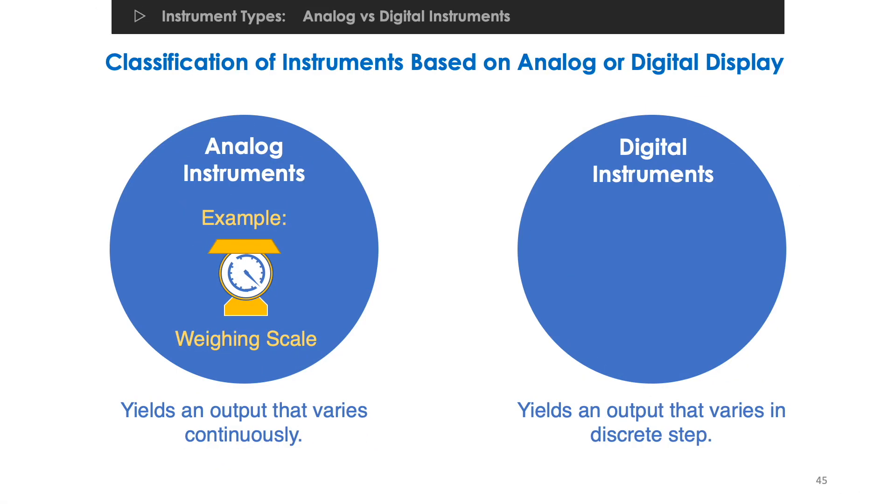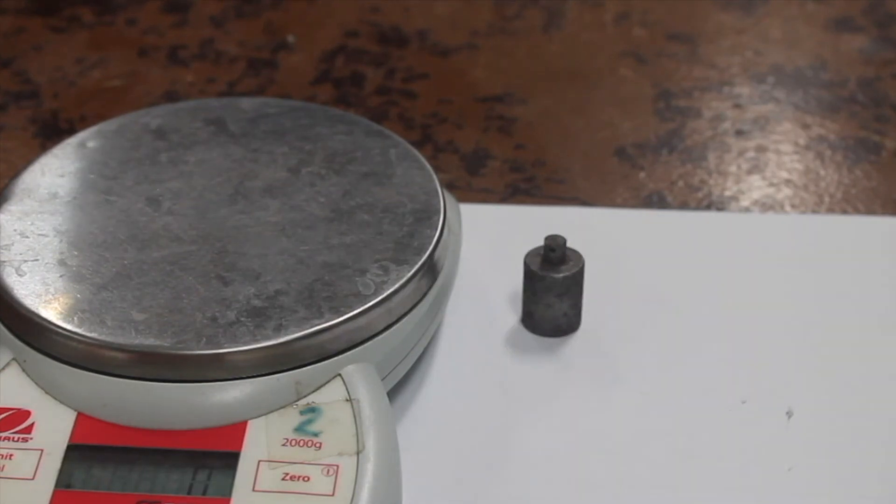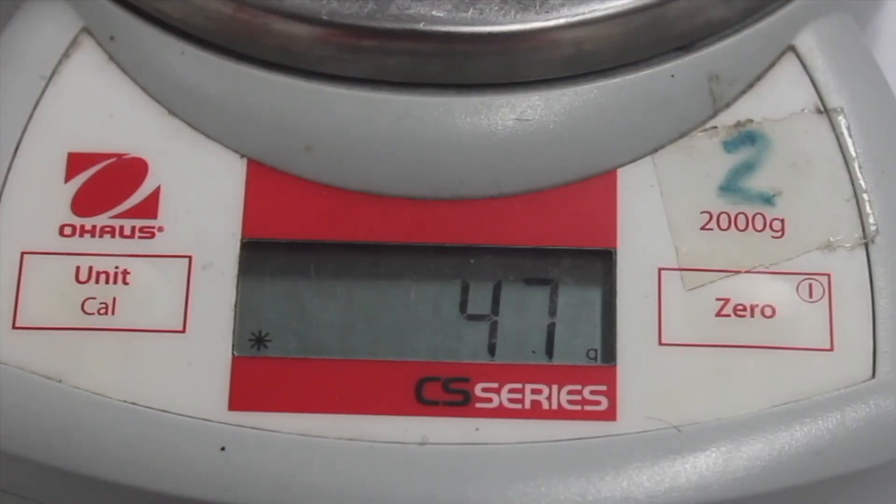On the other hand, a digital instrument has an output that varies in discrete amount. Consider a digital balance. When an object is loaded on its platform, the screen displays a weight that is in discrete intervals of 1 gram or 0.5 gram.